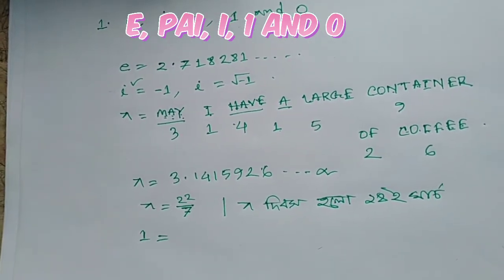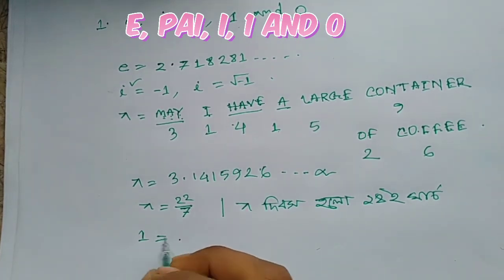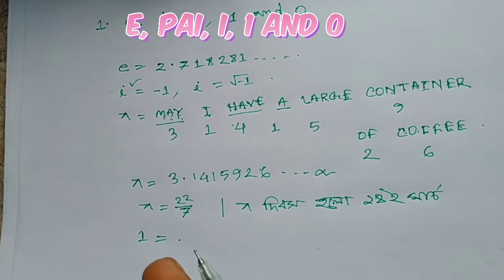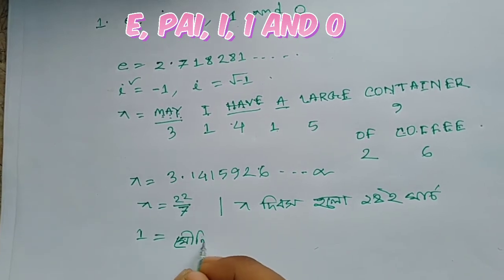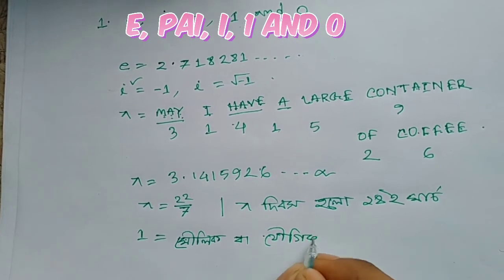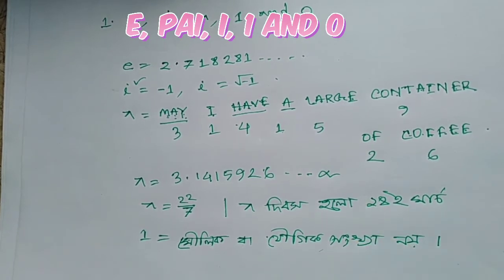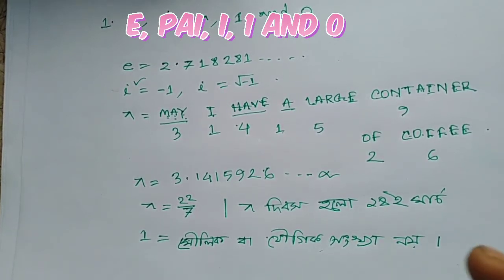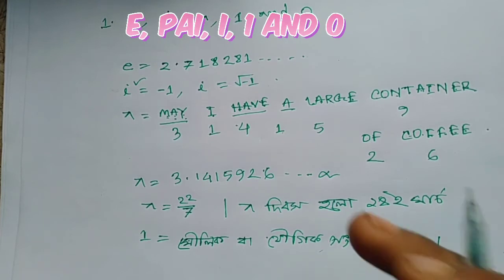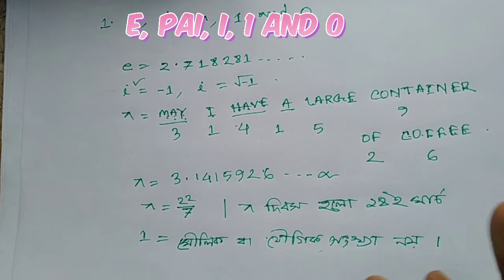We know about 1. What is the number 1? 1 is considered the first digit in our world. 1 is simply 1.